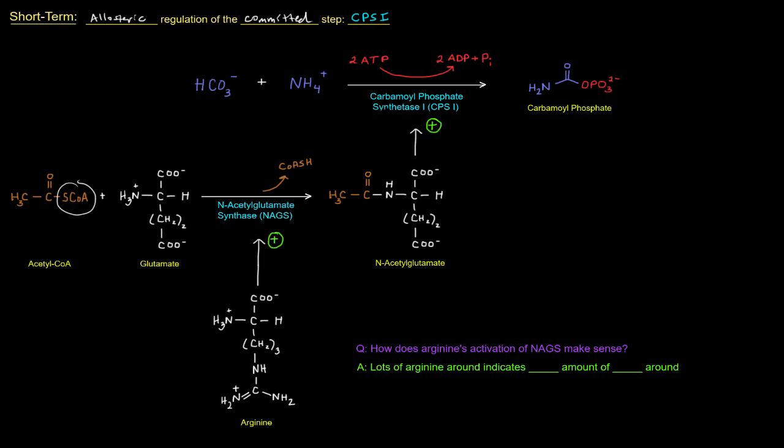So the way I think about it is lots of arginine. Well, arginine is an amino acid. If there's lots of arginine around, it indicates a high amount of amino acids around. And that would make sense if a high amount of amino acids are around, you would want, if we're processing them, processing the nitrogen from them, it would make sense that a high amount of amino acids would stimulate the urea cycle. So that's kind of what's going on here. Lots of arginine indicates high amount of amino acids, high amount of amino acids stimulating or activating the committed enzyme.